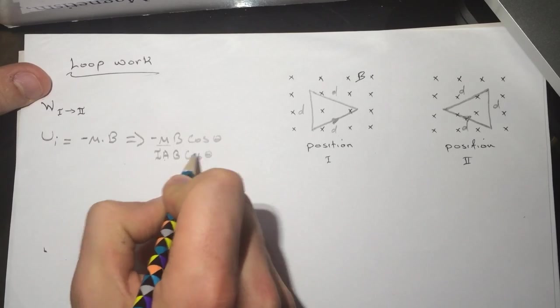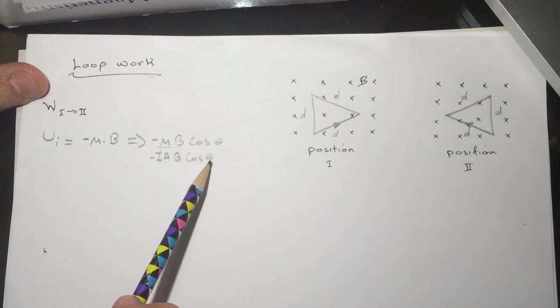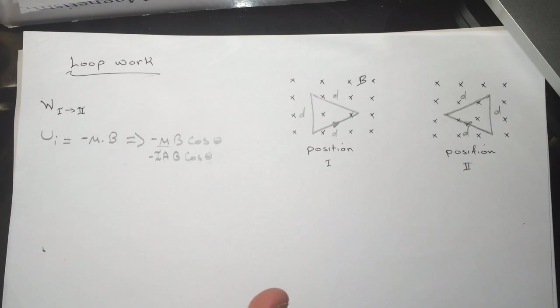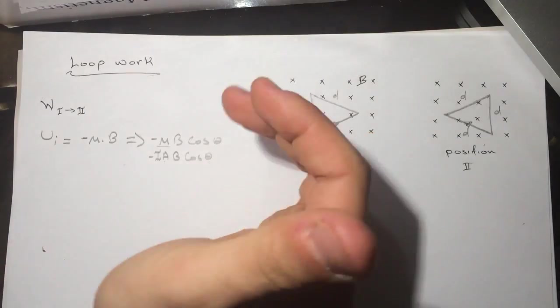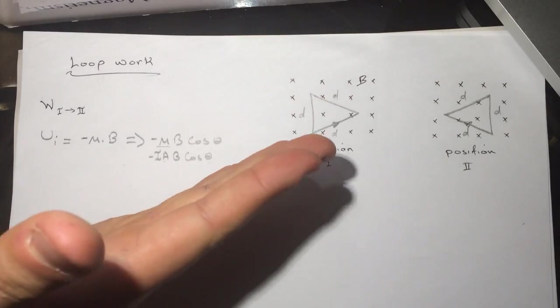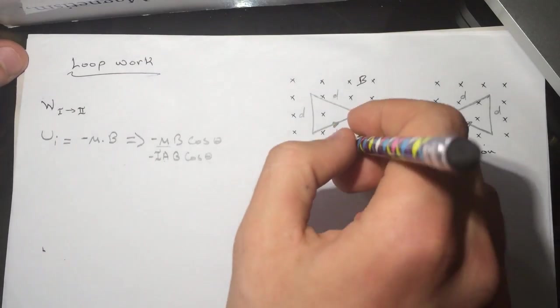What is the theta here? The theta is the angle between the dipole moment and the B. How would we know the dipole moment? Well, you cross your fingers with the current.